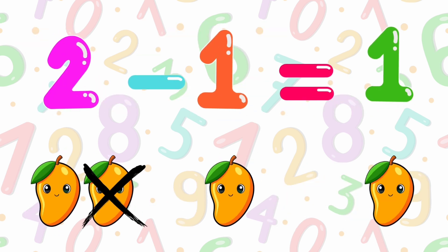2 minus 1 is equals to 1. 2 mangoes minus 1 mango is equals to 1.